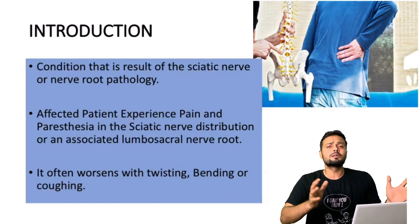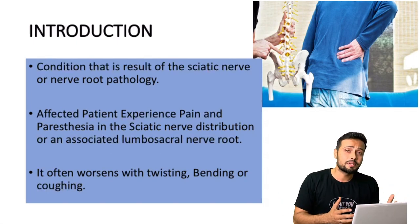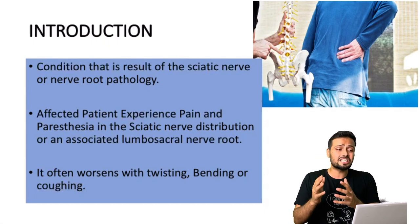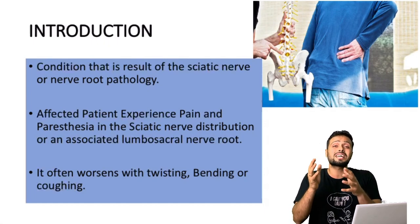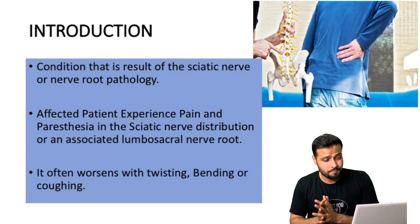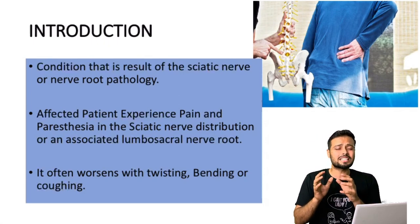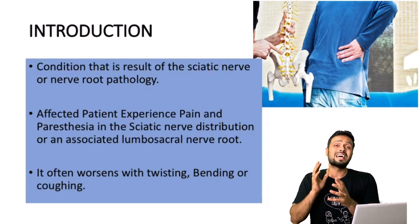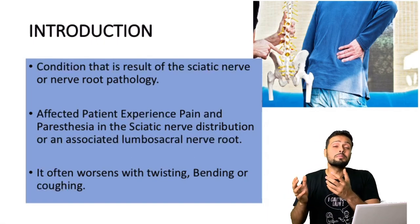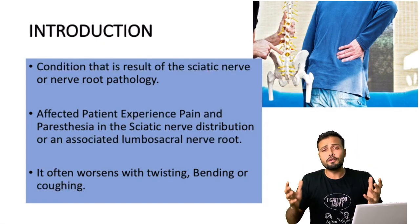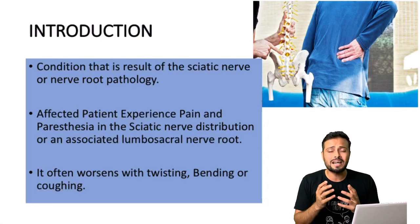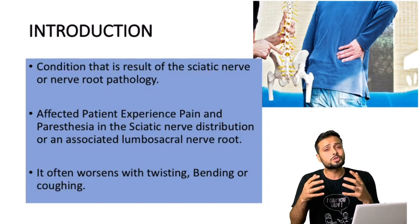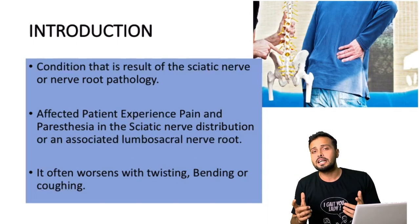So let's begin with a little bit of introduction — what is sciatica, why it happens, and what symptoms can be there. Basically, this condition is a result of sciatic nerve or nerve root compression. The affected patient mostly experiences pain and paresthesia at the sciatic nerve root, which can also include muscle weakness or limitation of activity. It often worsens with twisting forces, bending activities, or coughing.